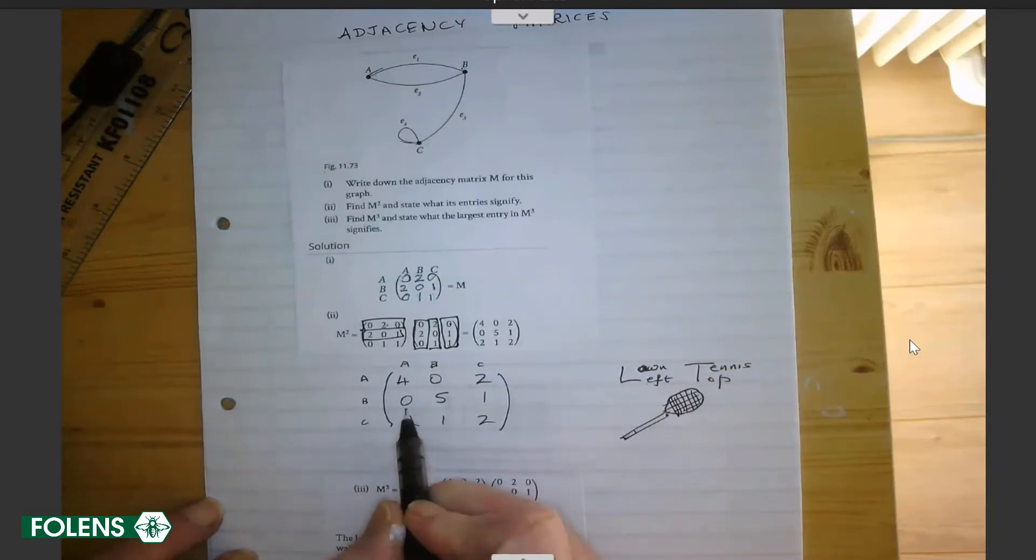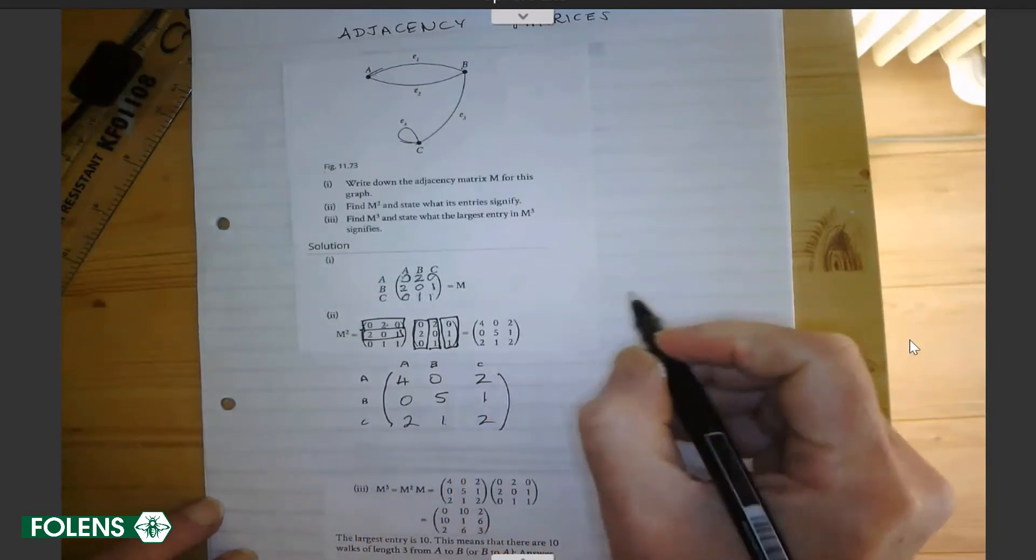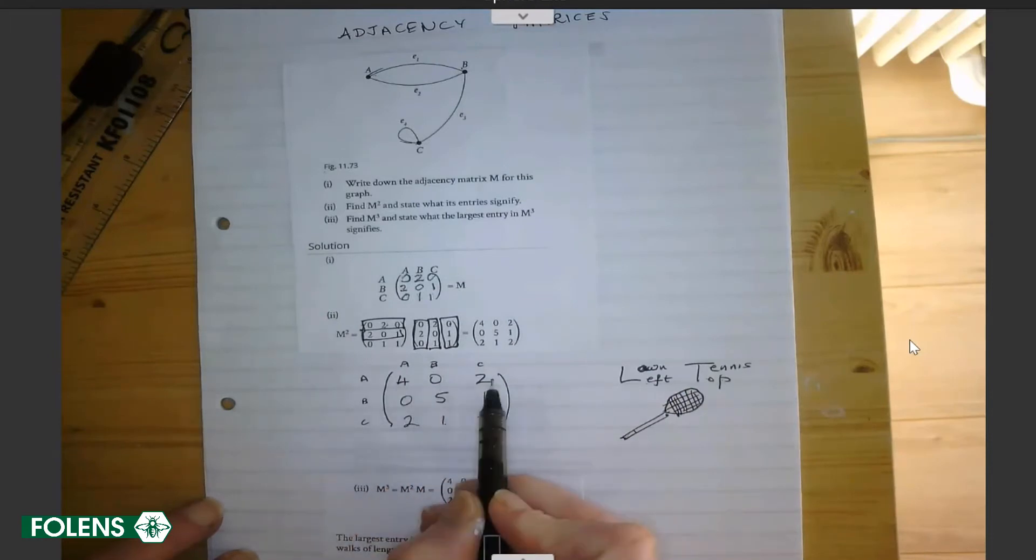And then you do the next diving board and you do the same. The answer is four, zero, two, zero, five, one, two, one, two. And you enter them in that order: first, second, third, fourth, fifth, sixth, seventh, eighth, ninth.